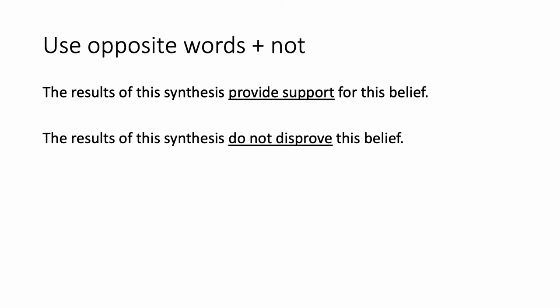Another way you can change the words in the sentence is to use opposite words plus 'not.' If you're not sure about a good synonym but the word has a very good opposite word that you know, you could just use the opposite word plus 'not.' So in this case, I changed 'provide support' to 'do not disprove' for a very similar meaning.